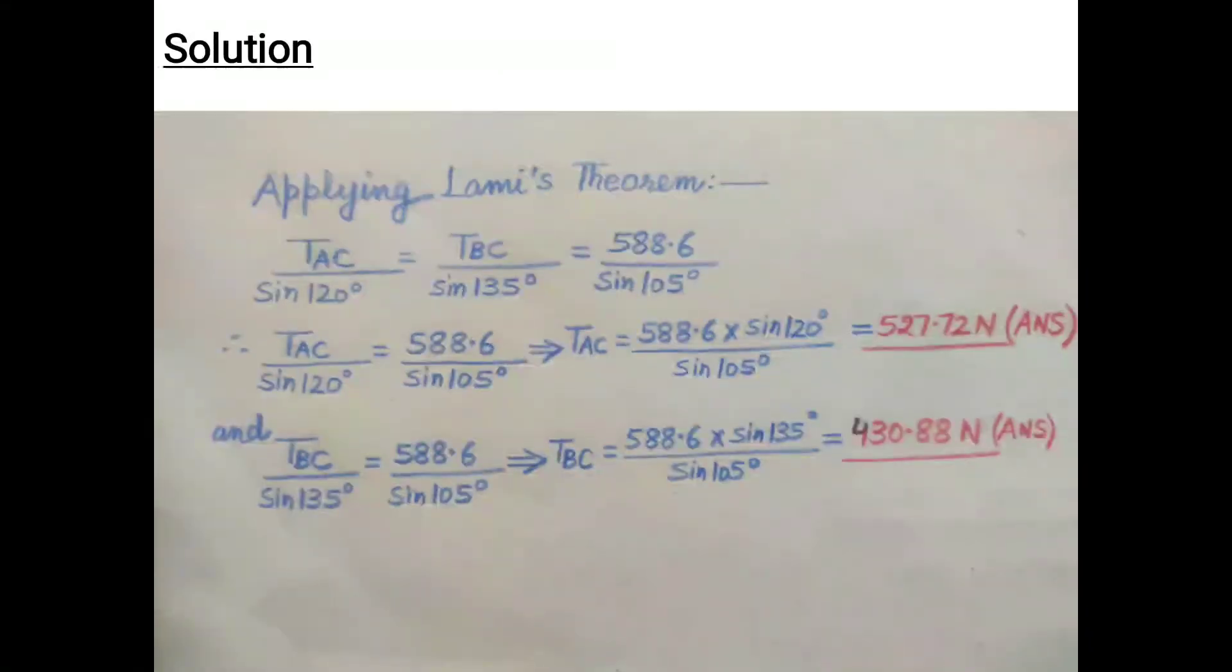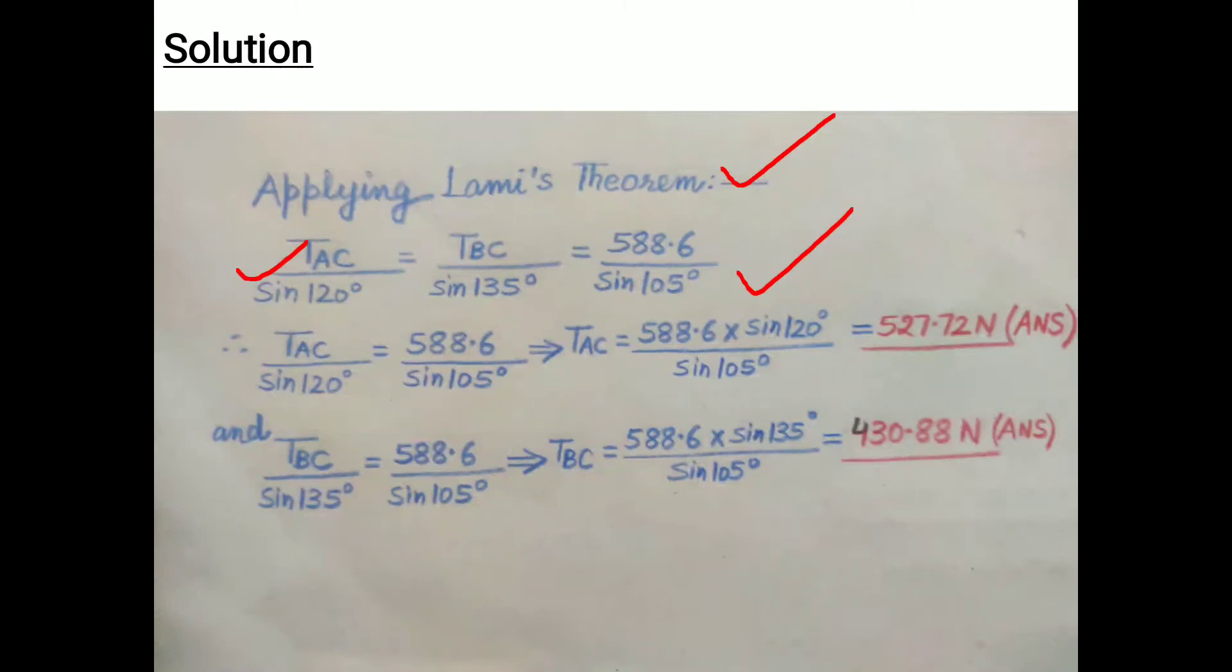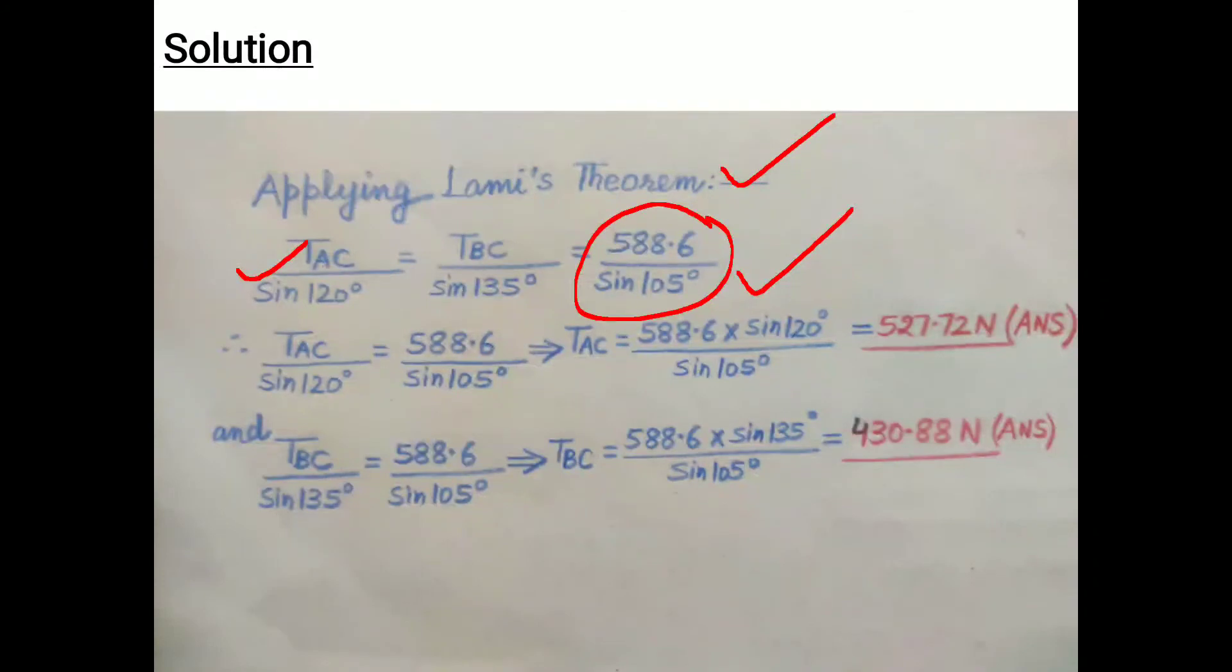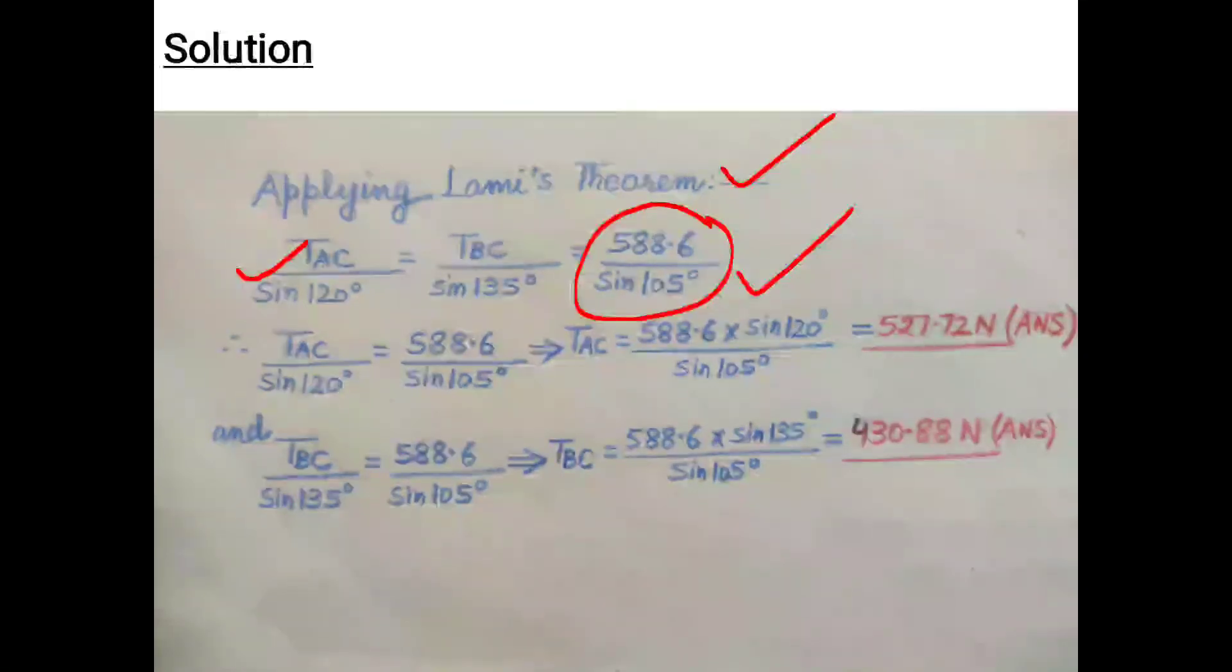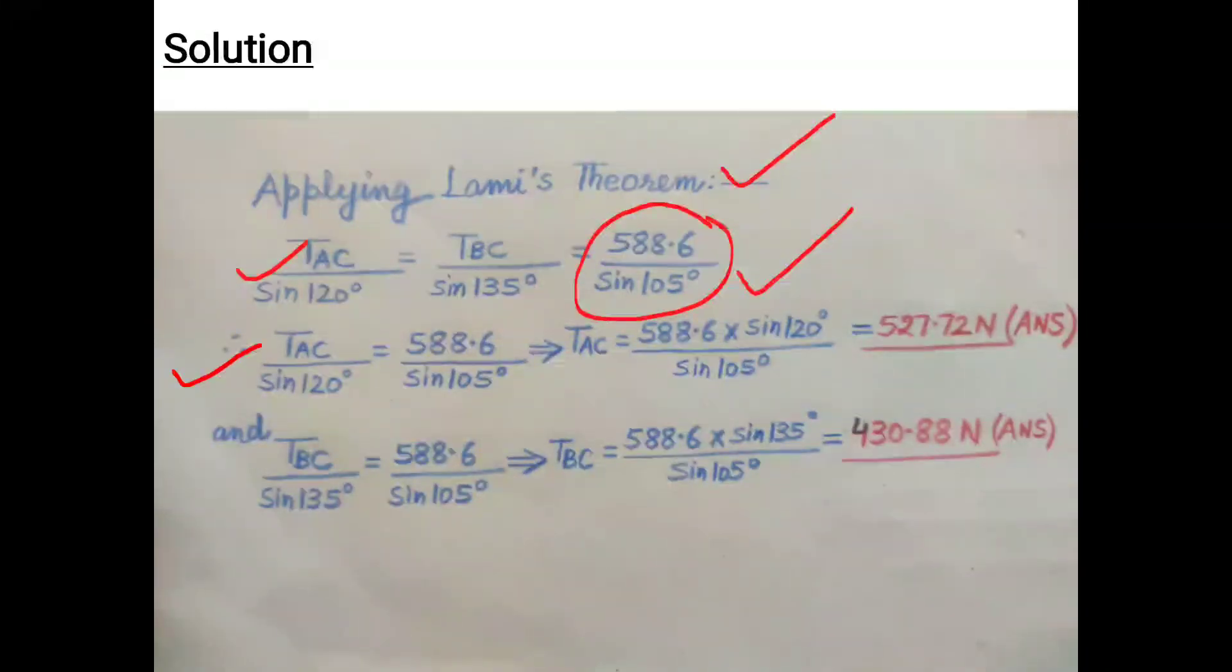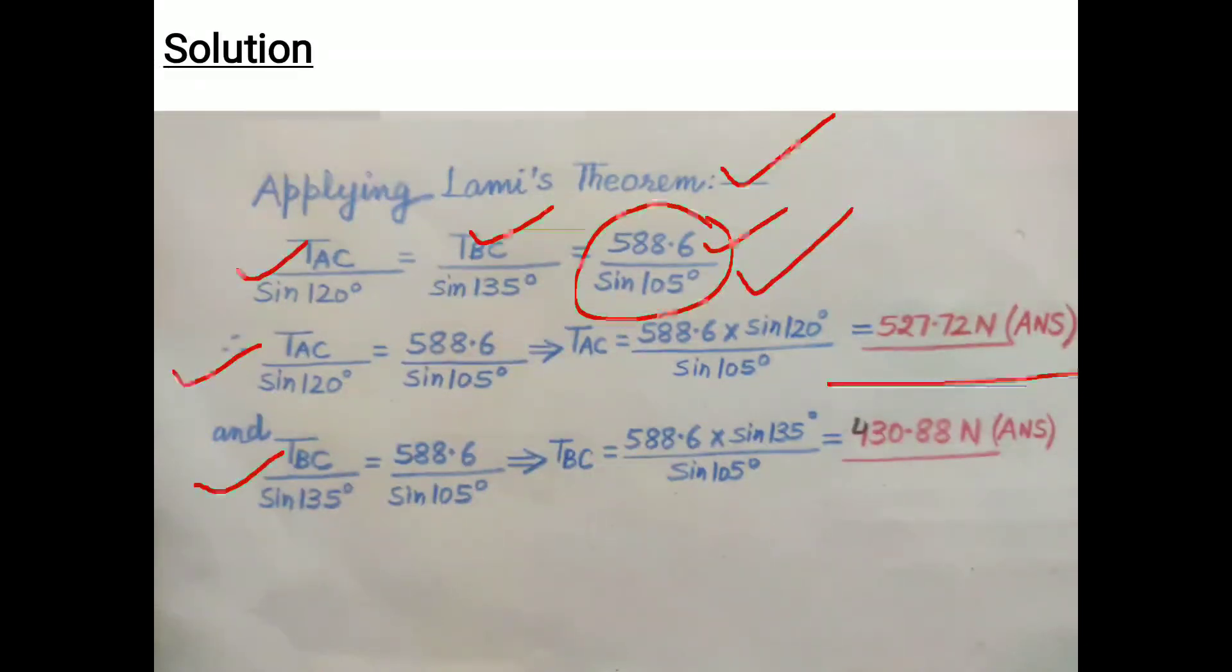Now use Lami's theorem. We equate each part separately with the third part because we have two unknowns, TAC and TBC. First, TAC is equated with the third part, giving us the answer for TAC. Then TBC is equated with the third part, giving us the second answer. This solves the problem.